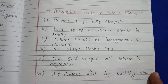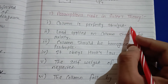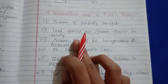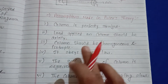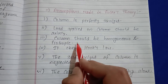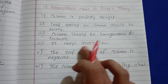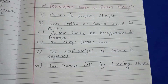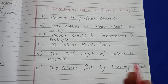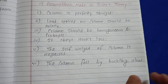Assumptions for Euler's column theory: the column is perfectly straight. The load applied on the column should be axial. The column is made of isotropic and homogeneous material. Hooke's law is obeyed. The self-weight of the column is neglected. The column fails by buckling alone.